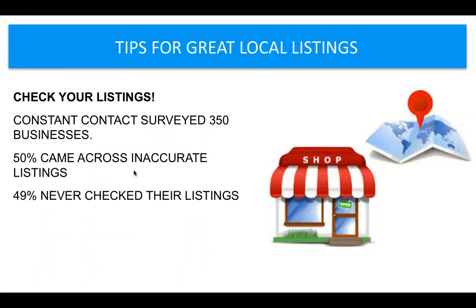Constant Contact surveyed 350 businesses and 50% of people from those 350 came across inaccurate listings — meaning they just hadn't checked in a while. They went there and looked at their local listing and found, 'wow, they have our wrong phone number, the address is incorrect, or that's an old website from 10 years ago.' You want to make sure you're checking that local listing for accuracy, because there's nothing worse than people finding your service and then they can't actually contact you because your information is inaccurate.